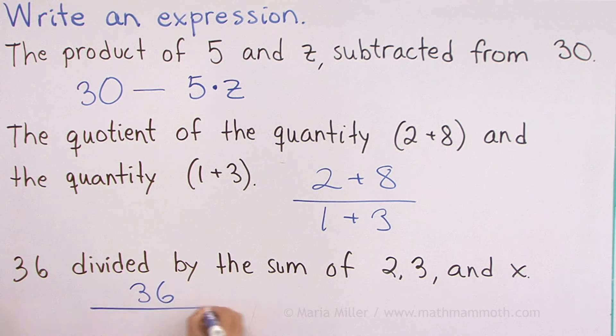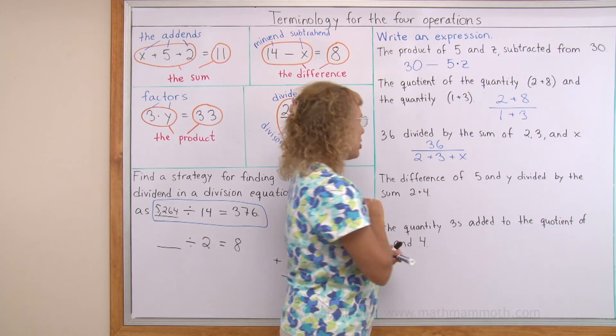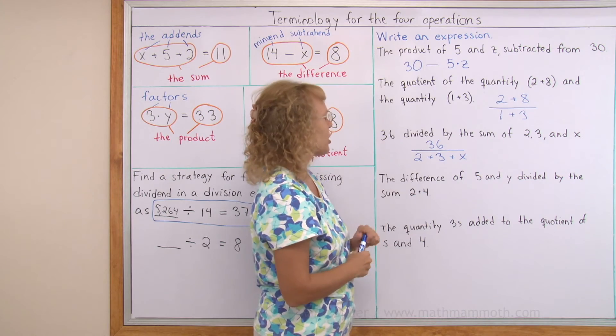Okay. 36 divided by, and then over here we put the sum or the addition, 2 plus 3 plus x. And we don't need to do anything to this expression. It is not asking us to do anything, just to write the expression.